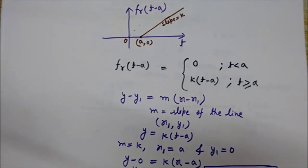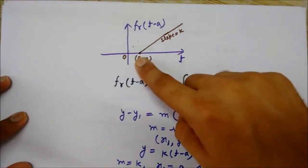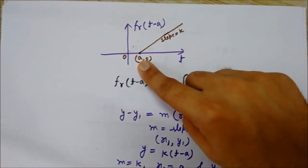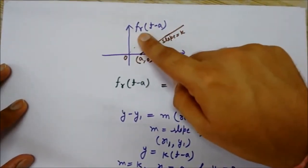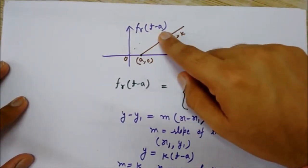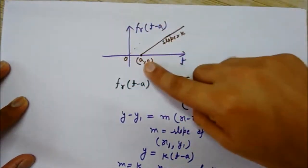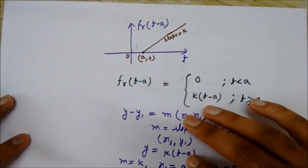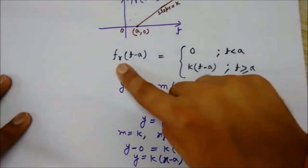Now we will see the shifted version of this ramp signal, as we have seen it in the case of the unit step signal. This signal's plot has been shifted to a constant value of a in the right direction, so it is denoted as fr(t minus a). The original shape has been shifted by a constant value a in the positive direction.